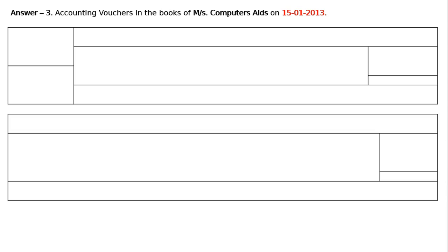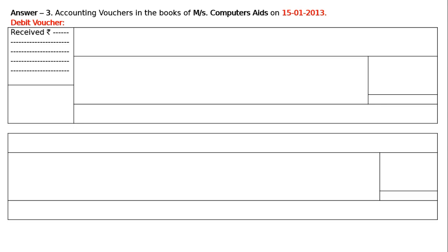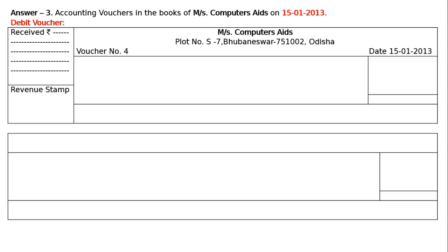And the next one: on 15th January, the transaction is — Mohan withdrew cash from bank for office use, vide cheque number 13456. For office use we have to draw a debit voucher. Write down received rupees 1,700. And just below this box you have to write down the revenue stamp. In the next column, write down the shop name with address — Messers Computer Aids, plot number A7, Bhubaneswar, pin code 751002, Odisha. Towards the left side we will have voucher number 4, and towards the right side the date is 15th January 2013.